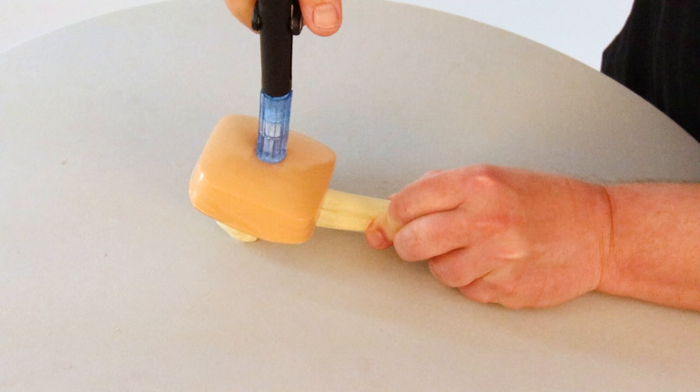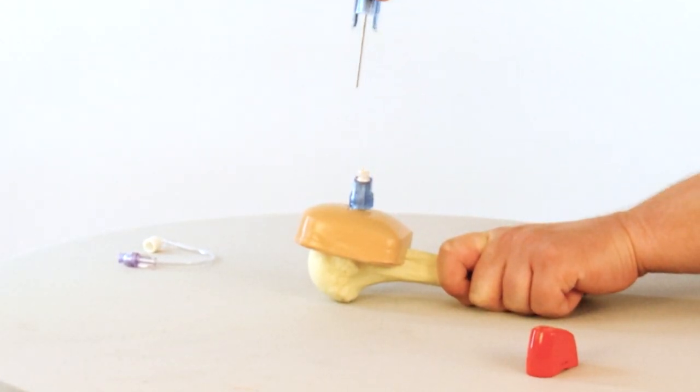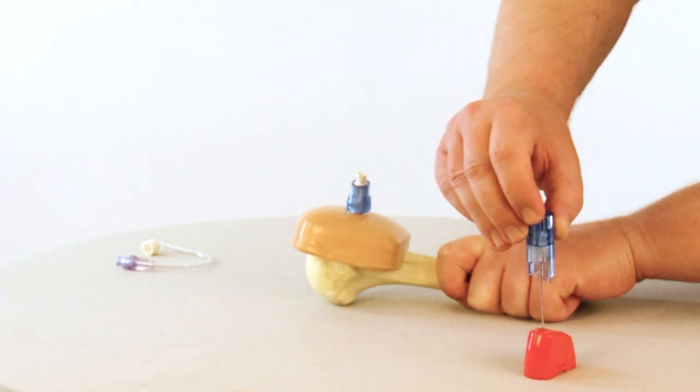Once needle assembly is properly positioned, the stylet is removed to expose a standard luer lock for extension set connection.